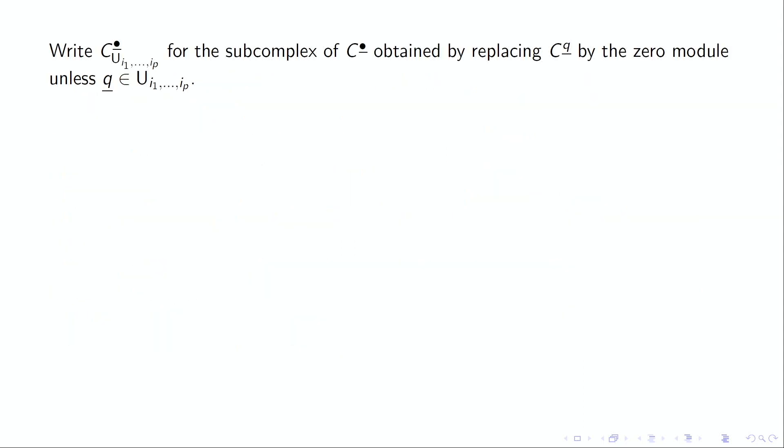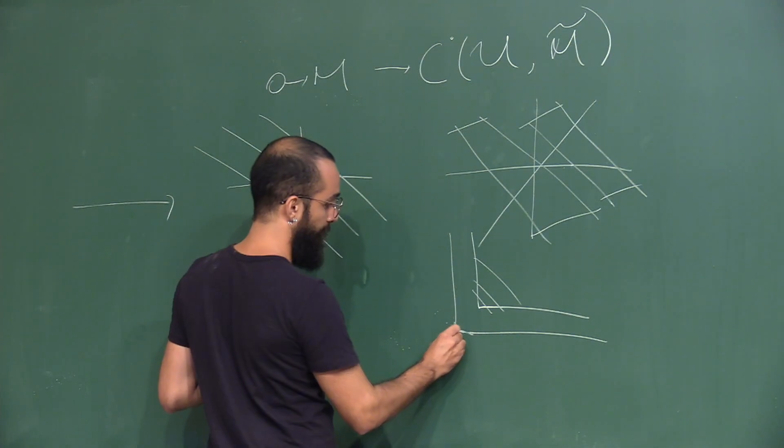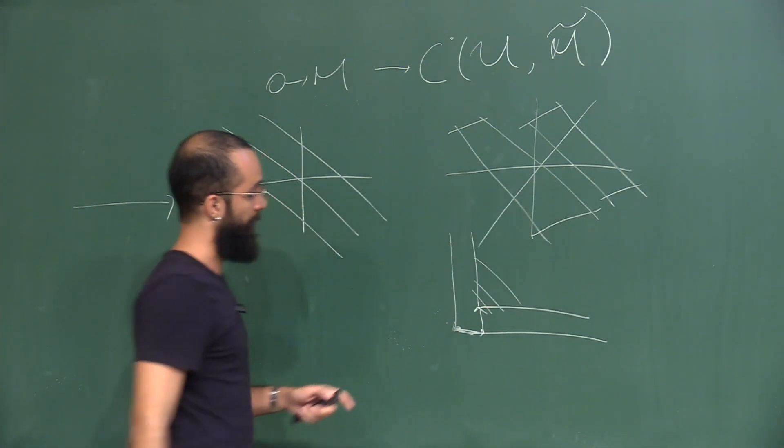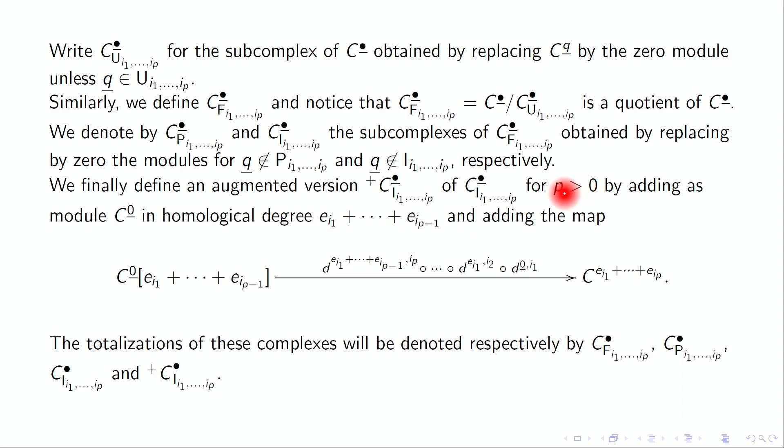For each region U we define the sub-multicomplex: C^q_U is C^q if q belongs to U, and is zero otherwise. We define this for all other regions the same way - C_F, C_P, C_I. We also consider this augmented complex where we have the interior here and we consider this module and take this composition, so you have this complex too.